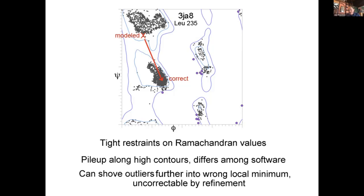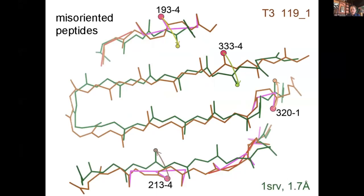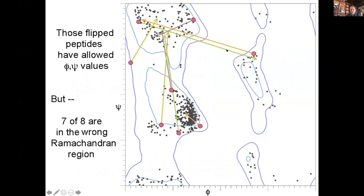Usually when you have a peptide misoriented, you will get two bad Ramachandran outliers that go to the wrong place, and so the refinement actually pulls the structure in the wrong direction. Here's a beta example with several, and all but one of them ends up in the wrong minimum on the Ramachandran plot — one of them just moves better into alpha, which is what you would want, but it usually doesn't happen.